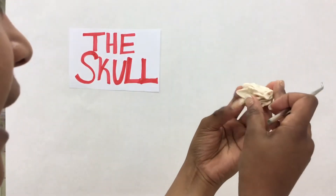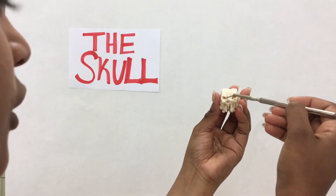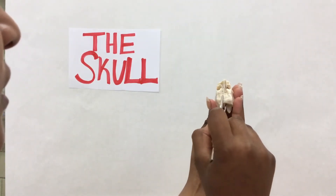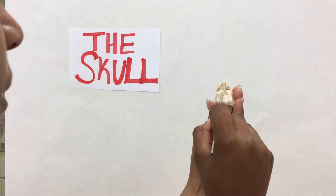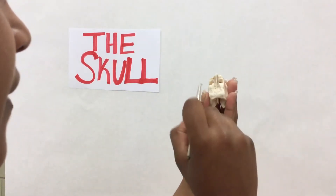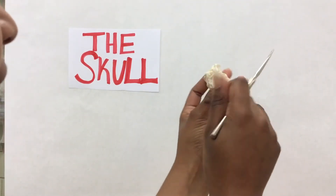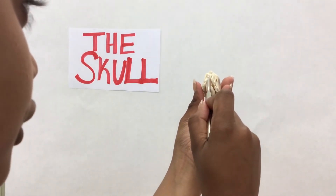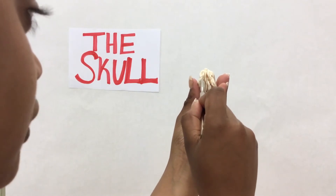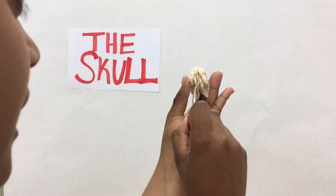This is the ethmoid bone. This is the crista galli. And this is the cribriform plates. So the crista galli is in the middle, and then the cribriform plates are on both sides. The ethmoid bone also has a perpendicular plate that splits the nasal conchae in half. And these right here are the middle nasal concha.